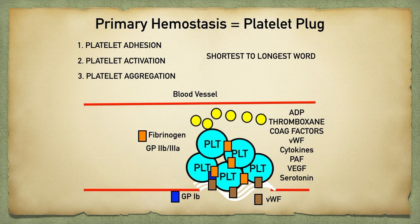The last thing to discuss are a couple of antiplatelet medications: clopidogrel and aspirin. Clopidogrel will inhibit the function of ADP, and aspirin will inhibit the formation of thromboxane. Remember that ADP and thromboxane were involved in binding to other platelets to activate them and recruit them to the site of injury to lead to platelet aggregation. So you can see how they serve as good antiplatelets because they prevent platelet aggregation from occurring — that's why they're good medications to use during a heart attack.